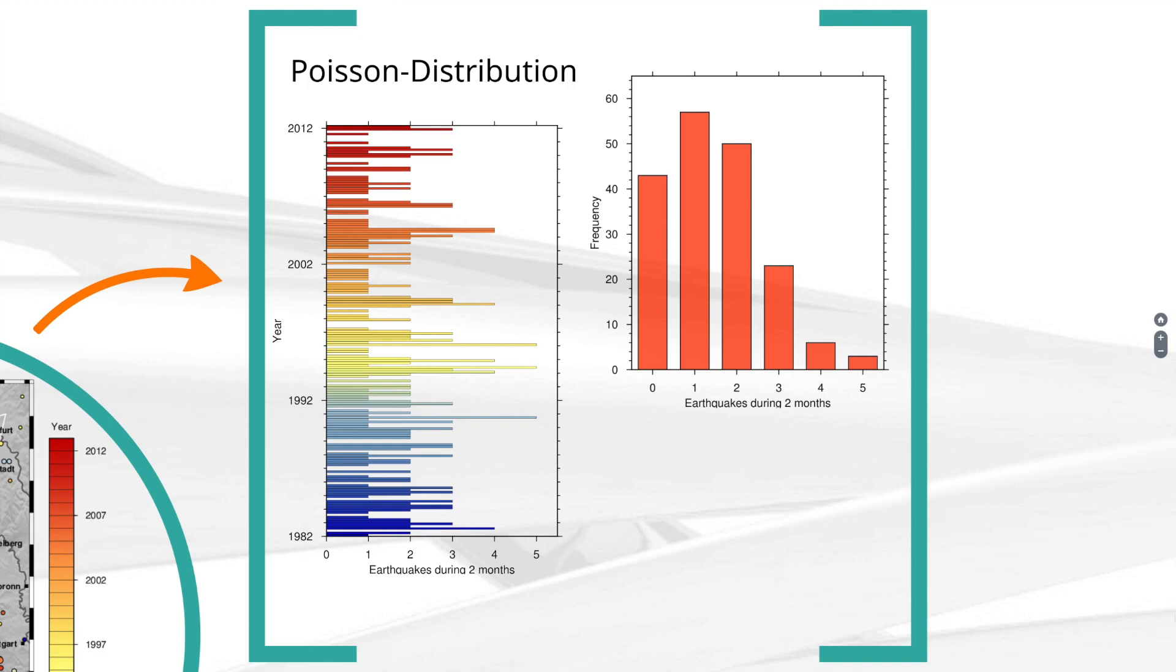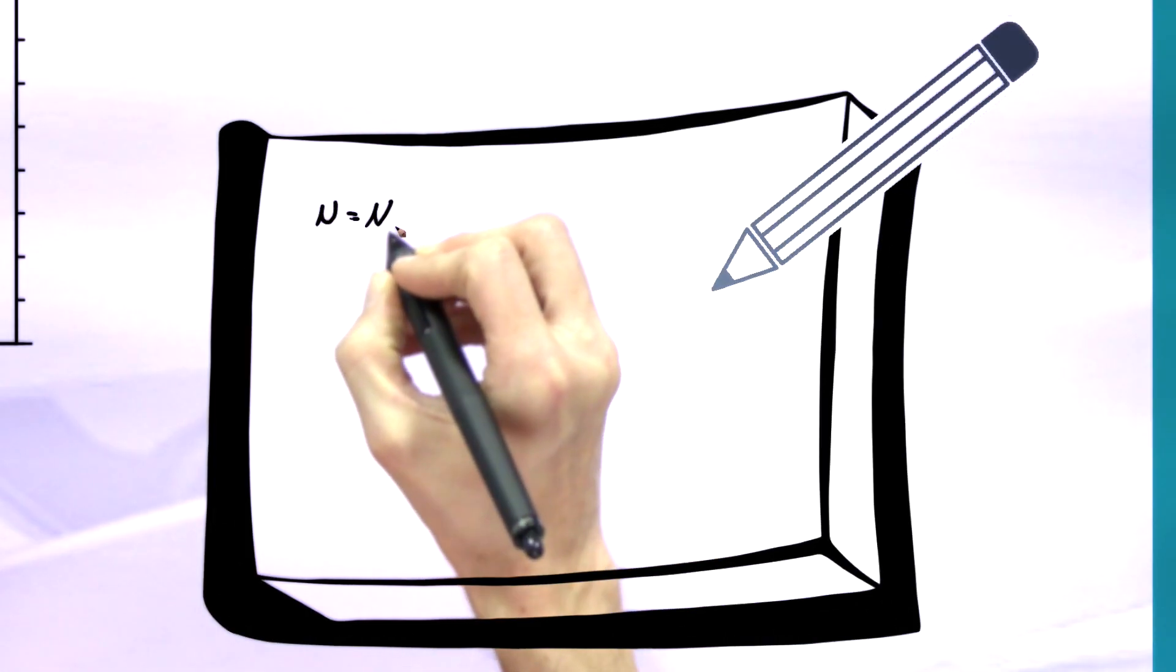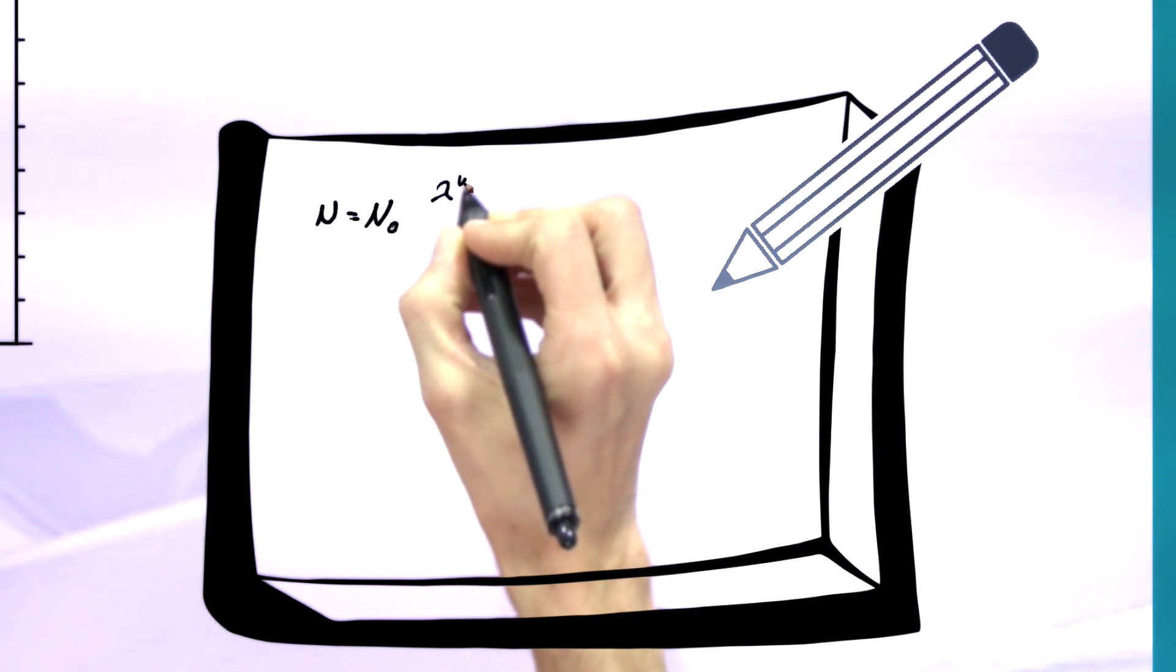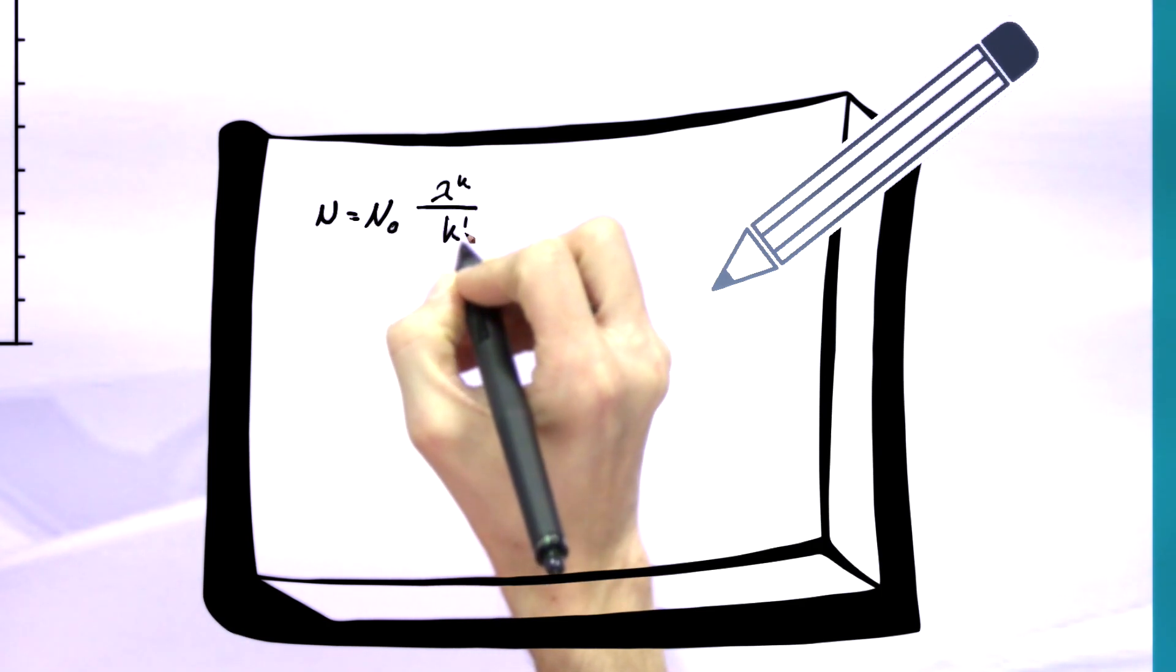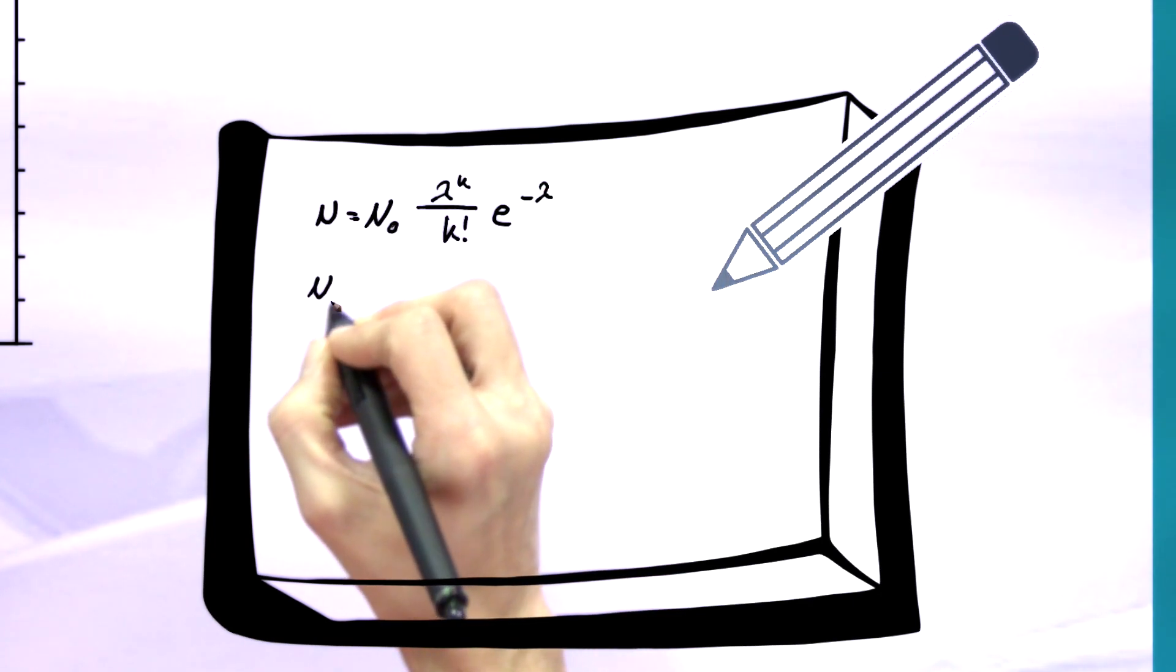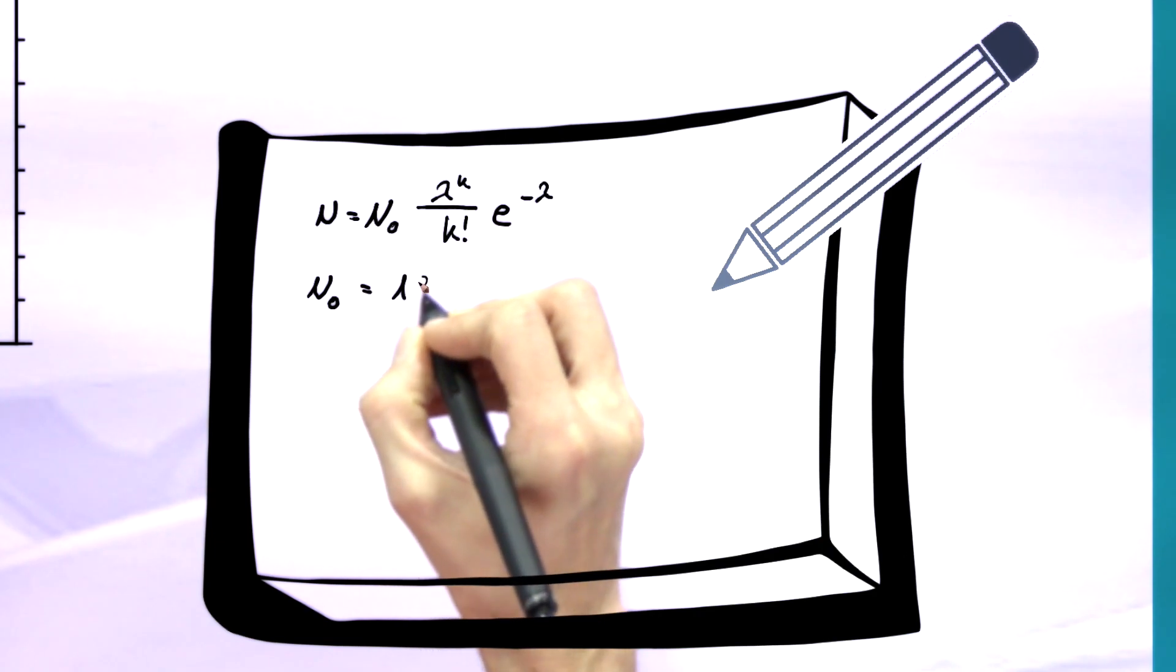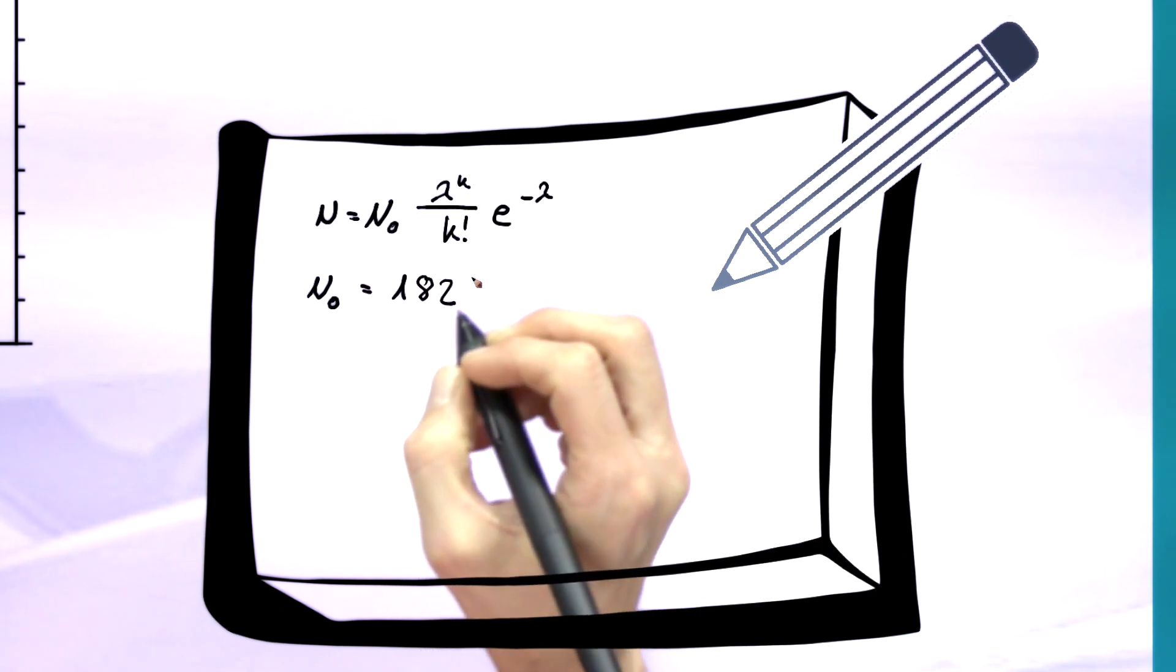A Poisson distribution is considered to exist when n equals n0 times lambda to the power of k divided by k factorial times e to the power of negative lambda. n0 is the number of time windows, in this case 31 years times 6 corresponding windows, giving 182.